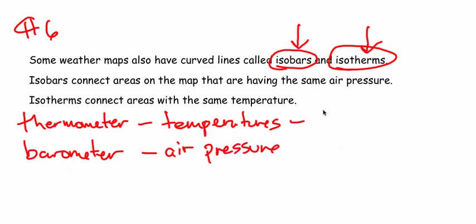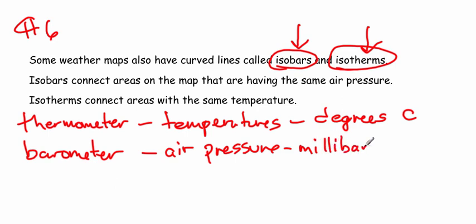Temperature would be in degrees Celsius, and air pressure would be in millibars of mercury. Do you see those word roots — therm and bar — in those two words?